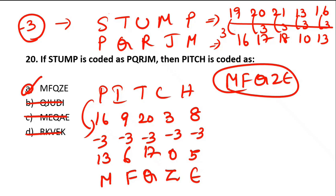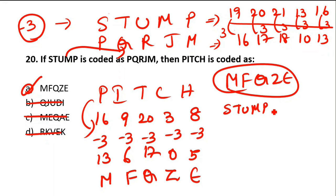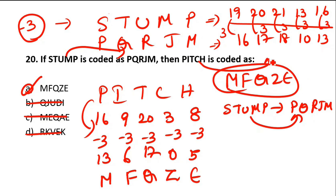Repeating: you can take numerical values of alphabets or go with alphabetical order — backward three positions. The logic for STUMP is minus 3, or backward three places. The word is STUMP, and it is coded as PQRJM. From STUMP to the given code, you check the pattern — it is not the reverse. Given PITCH, from PITCH you derive the respective code.